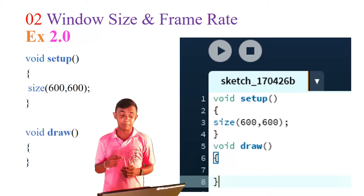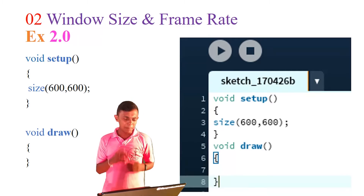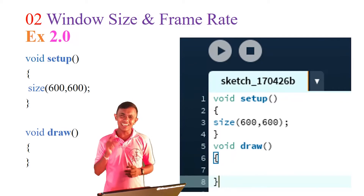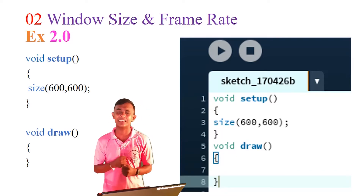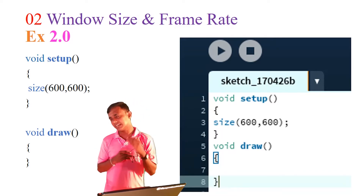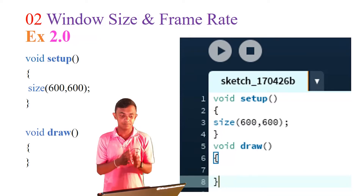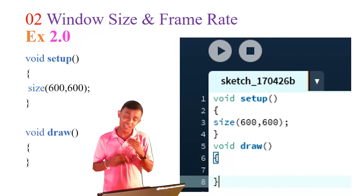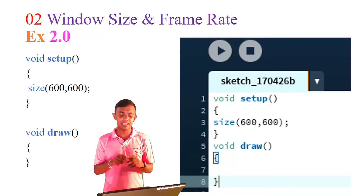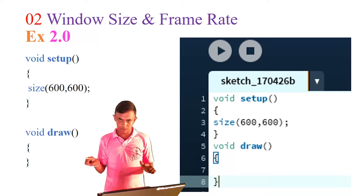We have to select the size — width and height. For example, we have to select 600. This is measured in pixels. The pixels define the width of the window. This is the window — it will be displayed. We will use the processing environment to practically demonstrate this.